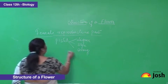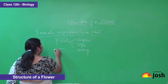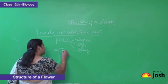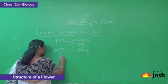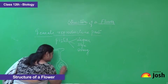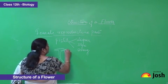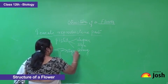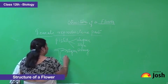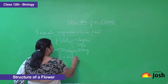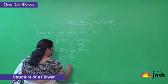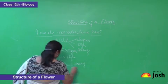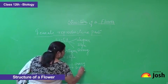If we draw the diagram of a stigma, stigma looks somewhat like this. This is stigma, style, ovary, and these are the ovules.